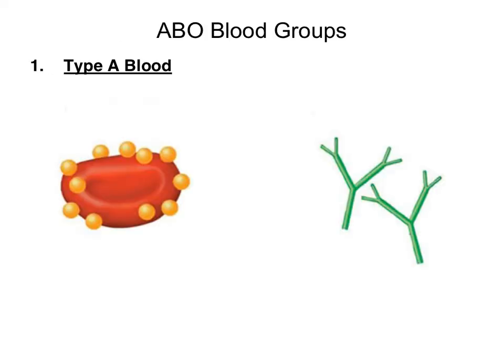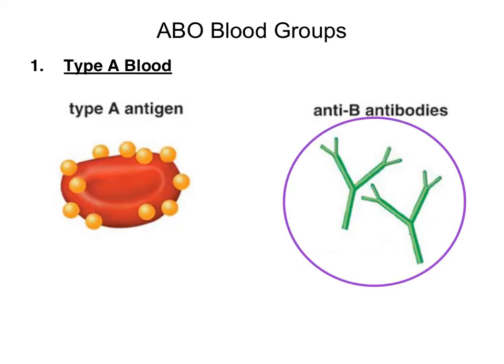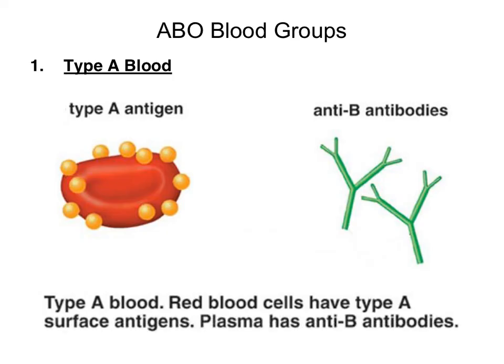In the next set of slides, we're going to discuss the ABO blood group. The first blood type is type A blood. The surface of a red blood cell contains the type A antigen, while the plasma contains anti-B antibodies. In summary, a person with type A blood would have red blood cells with type A surface antigens, and plasma which contains anti-B antibodies.